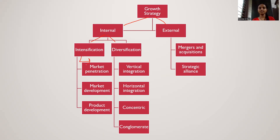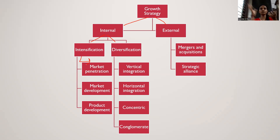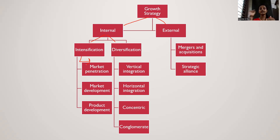Under intensification, the first one is market penetration. Market penetration basically happens when you have an existing product and you want to introduce it in an existing market — both the product and the market are already existing. For example, take the soap industry: it is already existing and soap is already an existing product. At that time you would go for market penetration — entering a market that is already existing with an existing product. This needs a lot of courage and involves a lot of risk because there are already many established competitors.